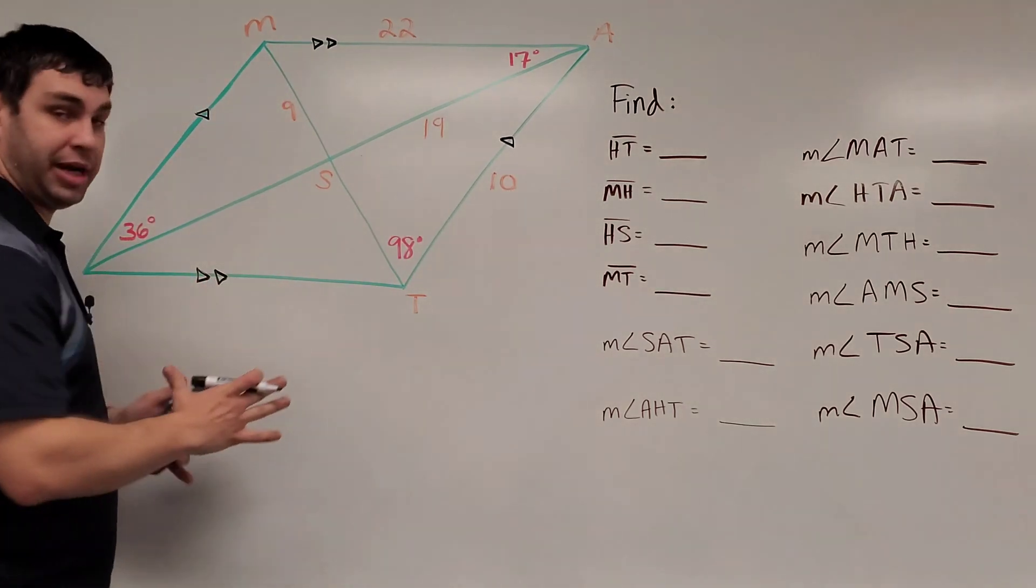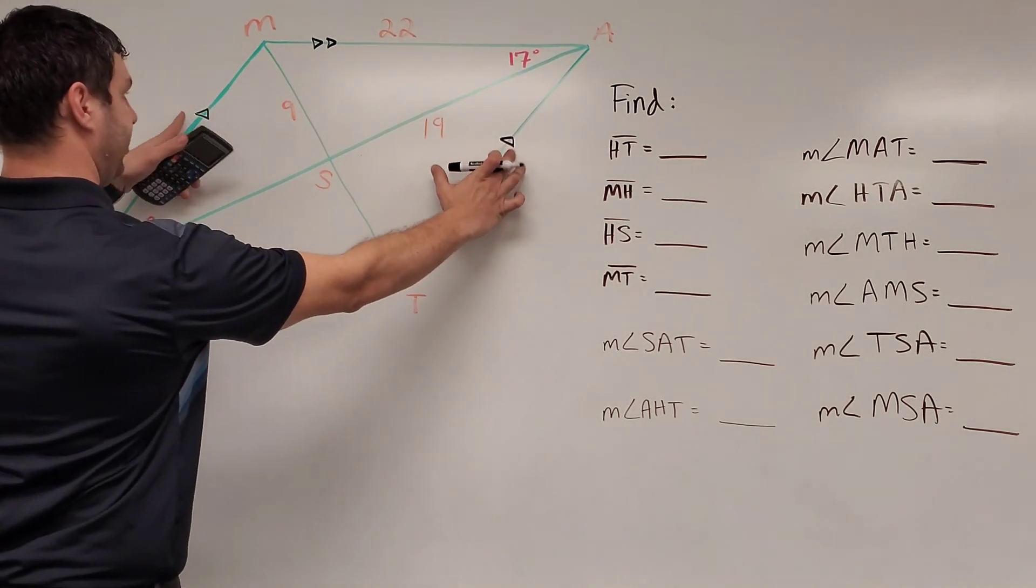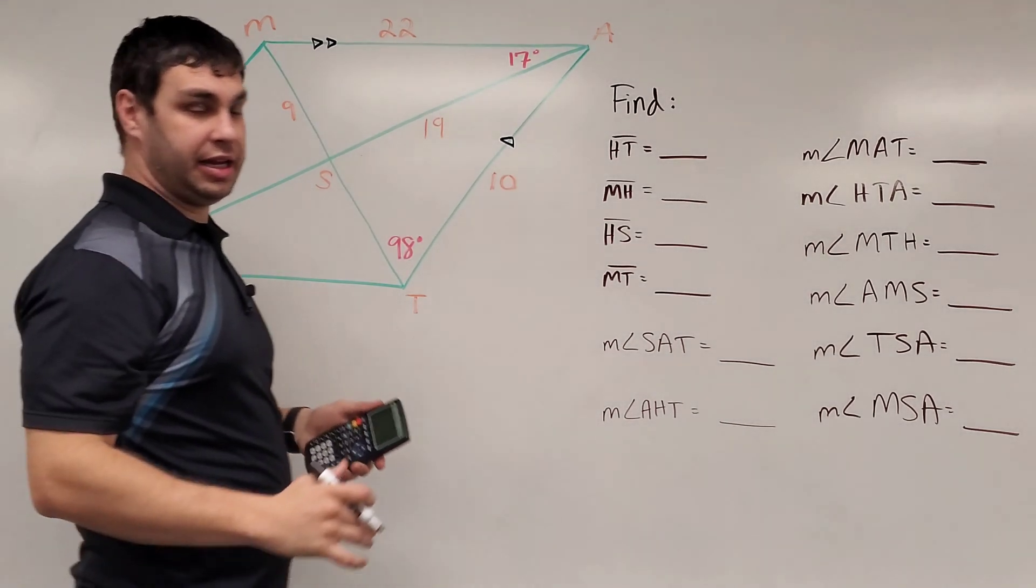Hey guys, in this problem I have a parallelogram. I know that because both sides have these arrows, which mean that they're parallel.